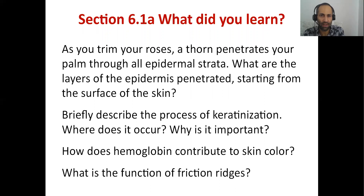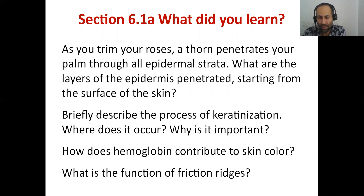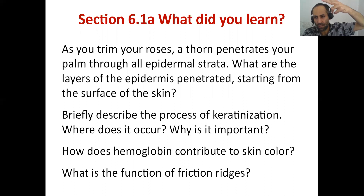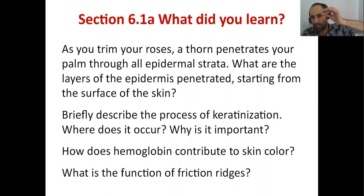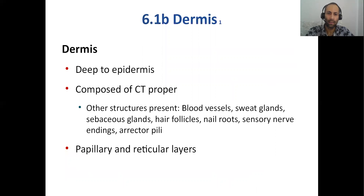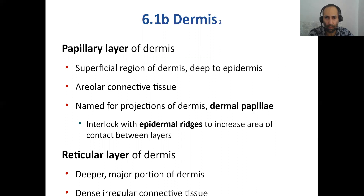As you trim your roses and a thorn penetrates your palm through all epidermal strata, it would penetrate stratum corneum, stratum lucidum, stratum granulosum, stratum spinosum, and stratum basale. The process of keratinization: the bottom three layers have living cells; the top two are dead keratin. This gives protection and dehydration prevention capabilities. Hemoglobin contributes that reddish tinge to skin color. Friction ridges of fingerprints help you grasp objects; footprints help your feet be planted safely for bipedal walking.